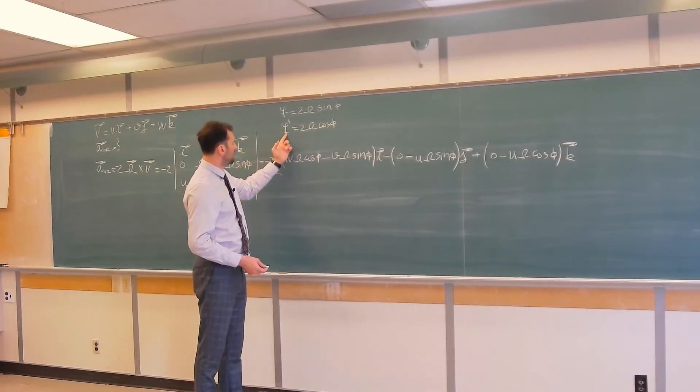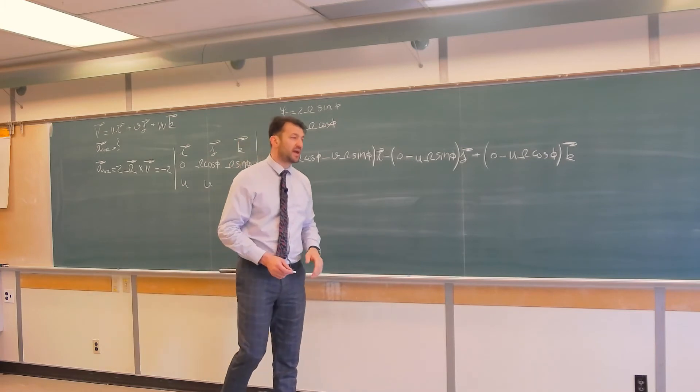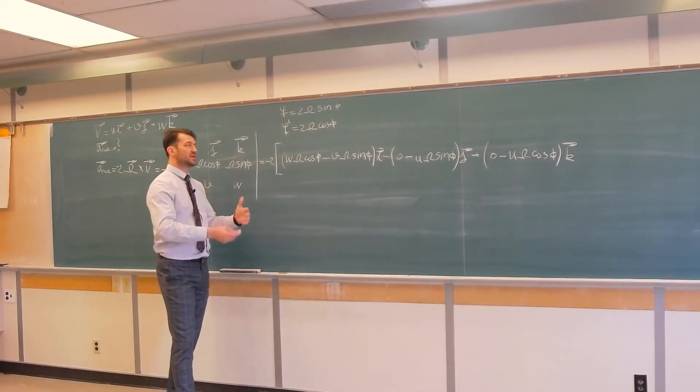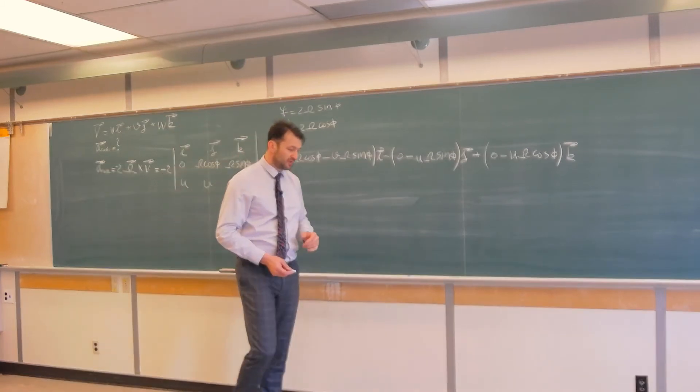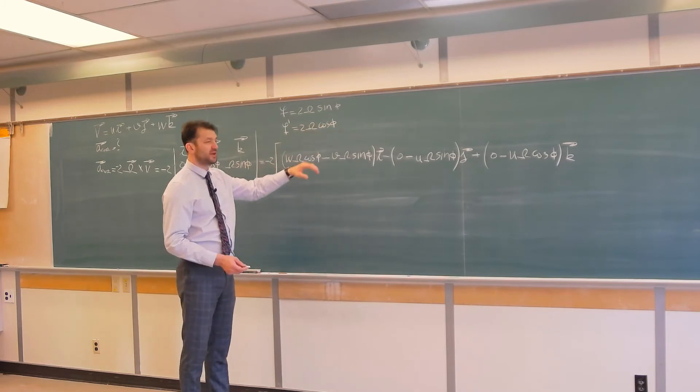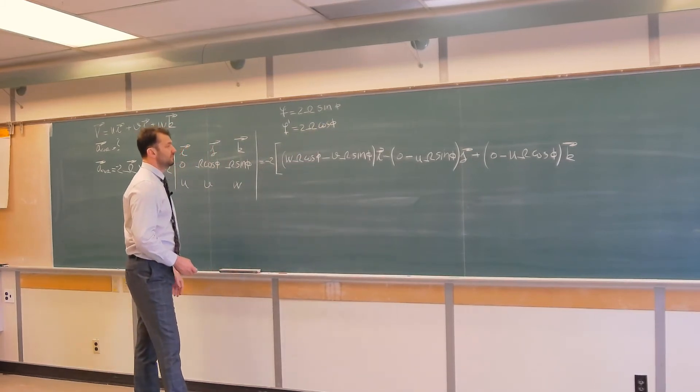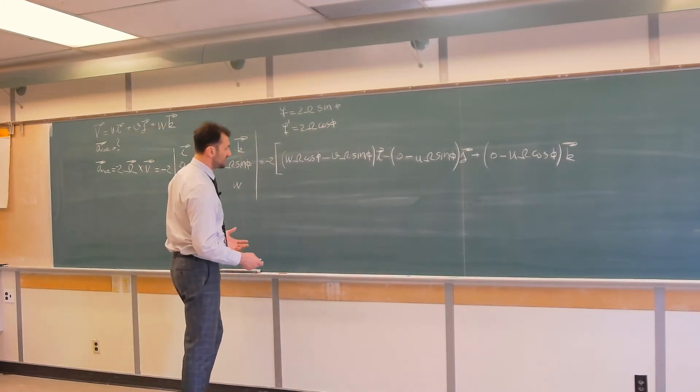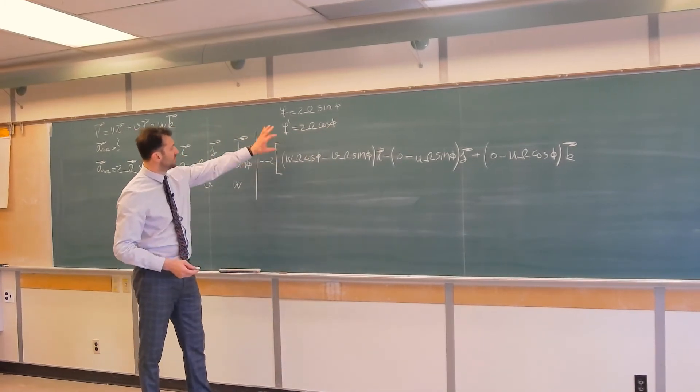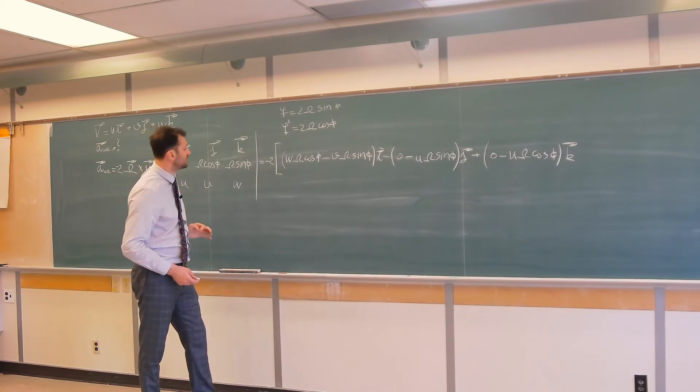But F prime which also means by the way that horizontal actions of the Coriolis force are opposite on the northern and southern hemisphere. But in terms of F prime because cosine of positive or negative angle is the same number cosine doesn't depend on the sign of the angle. This will be the same for northern and southern hemisphere.